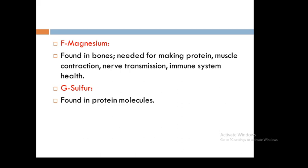Magnesium is found in bones and is needed for making protein and muscle contraction. The sources of magnesium include green vegetables, seafood, chocolate, artichokes, and hard drinking water.